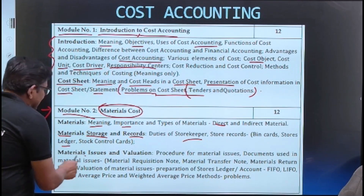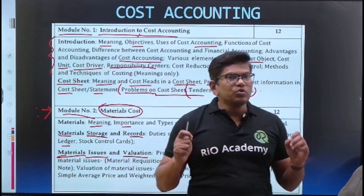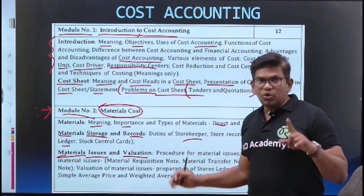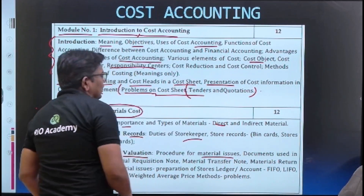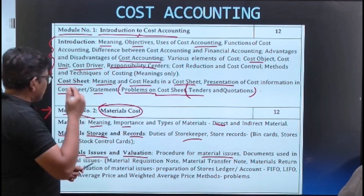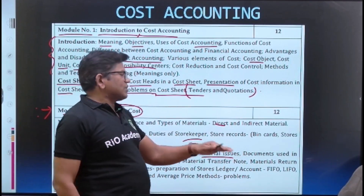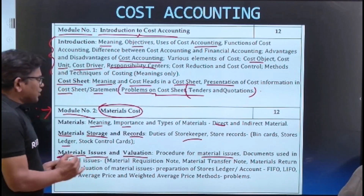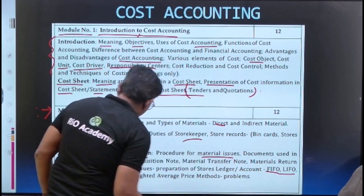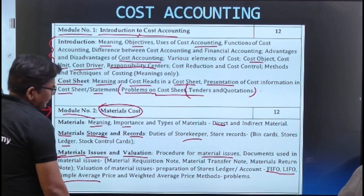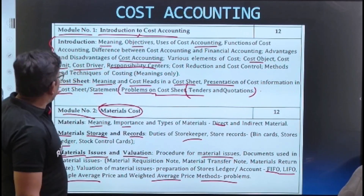Store ledgers and stock controls are also part of this important segment of Module 2. Material issue and valuation is a very important term in material cost. We cover the procedure for material issue, documents used in material issue — material requisition notes, material transfer notes, material return notes — and valuation of material issue using methods such as LIFO, simple average method, weighted average method, and price method.